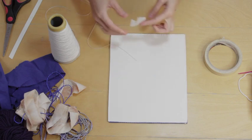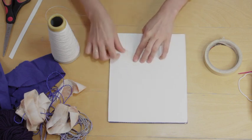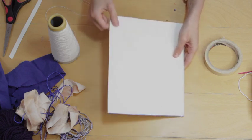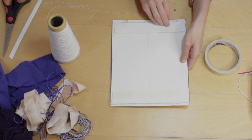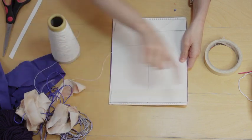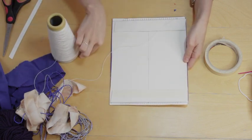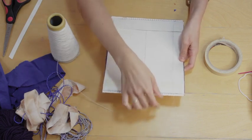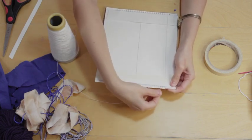I'm going to take my warp thread to the back of my card here, and then I'm going to bring it through that first slot to the front. Now we're going to work across in this direction, and I'm going to take my warp thread to the exact opposite point here around the back.